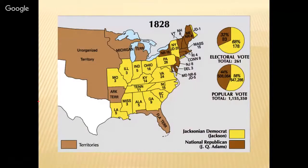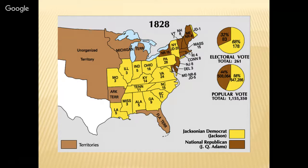Looking at a similar electoral map from 1828, you can see hands down who won — and it was Andrew Jackson, shown in yellow dominating the map.